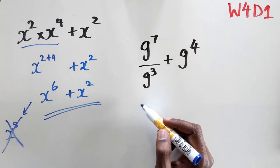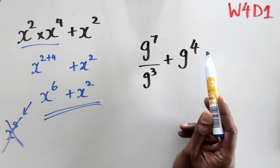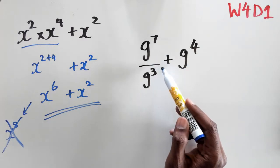Let's look at the second question here. We've got g to the power of 7 divided by g to the power of 3, plus g to the power of 4. So we've got to work out these two first.